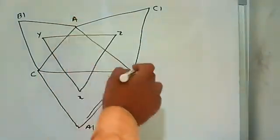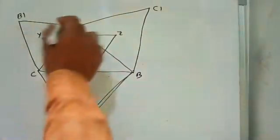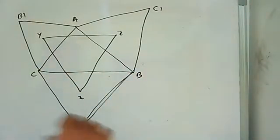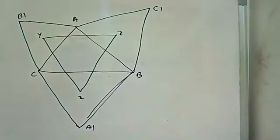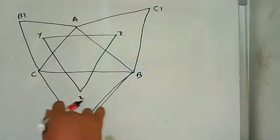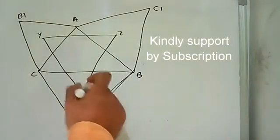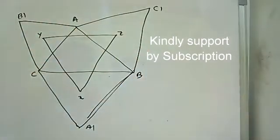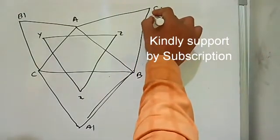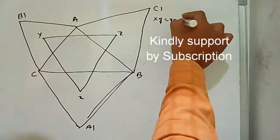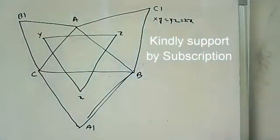In this figure, ACB1 is an equilateral triangle, ABC1 is also an equilateral triangle, and BCA1 is also an equilateral triangle, and X, Y, Z are the three centroids of the three triangles. So we have to prove that XYZ is an equilateral triangle, that means XY equal to YZ equal to ZX.